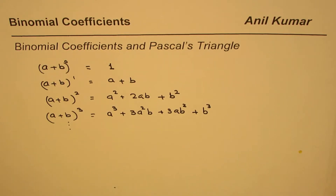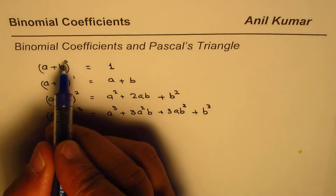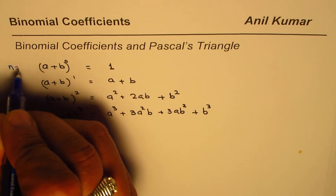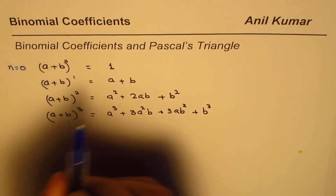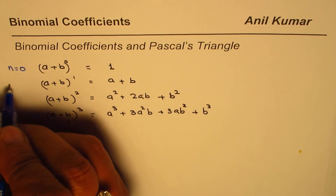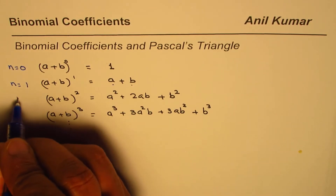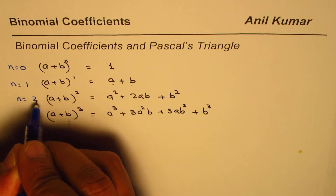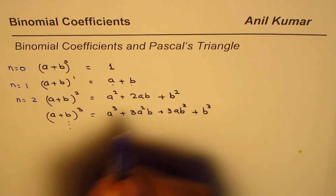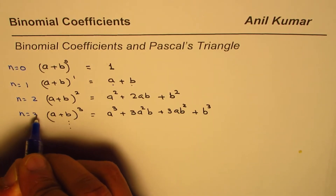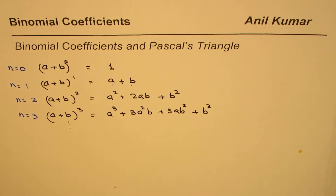An important observation: when the exponent n is 0, we get 1 term. When n is 1, we get 2 terms. When n is 2, we get 3 terms. When n is 3, we get 4 terms. So the number of terms is always 1 more than the exponent.